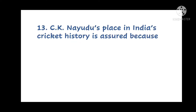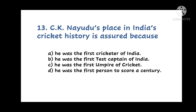Question number 13. C.K. Nayudu's place in India's cricket history is assured because: A. He was the first cricketer of India, B. He was the first test captain of India, C. He was the first umpire of cricket, or D. He was the first person to score a century. Why is C.K. Nayudu's place in India's cricket history assured?